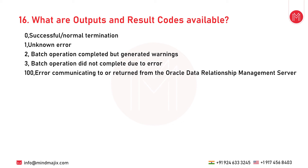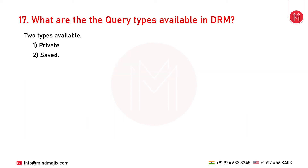The next question is: what are the outputs and result codes available in DRM? Result code 0 means successful or normal termination; 1 means unknown error; 2 means batch operation completed but generated warnings; 3 means batch operations did not complete due to error; 100 means error communicating to or returned from the Oracle DRM server; 200 means error during initialization of batch client; 210 means an invalid parameter value was passed; 220 signifies an invalid URL; and 230 means invalid username or password.